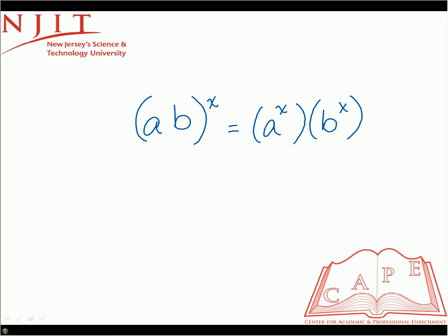So let's do an example of that. If we had 3 times 5 in parentheses, and the whole thing was raised to the 2nd or squared,